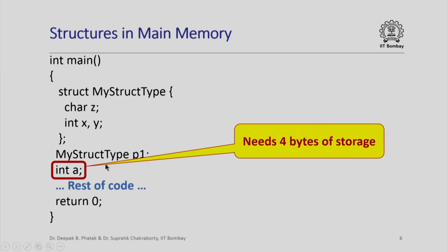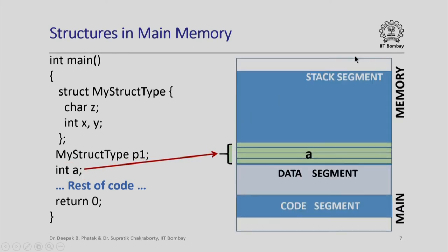Now, we know that every integer variable needs 4 bytes of storage. I can visualize the main memory here divided into three segments: the code segment, data segment and stack segment. A being a local variable of the function main, memory for A will be allocated in the activation record for main when main is called by the operating system, and this activation record will reside in the call stack in the stack segment. Therefore, memory for A is really allocated in the stack segment, and since we need four bytes and each location of main memory stores just one byte, we have four consecutive locations allocated for the integer variable A.